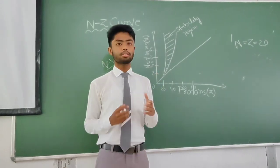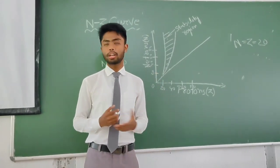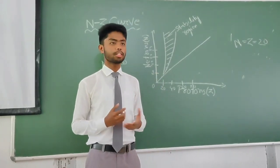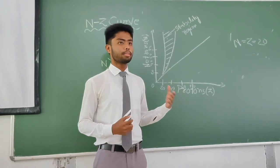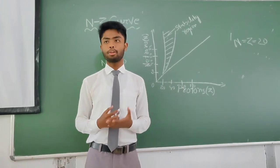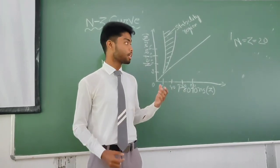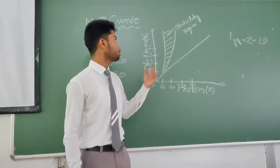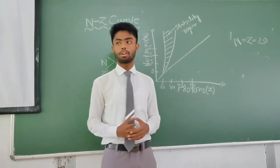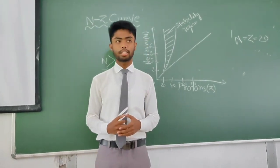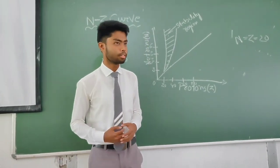In conclusion, we can say there is an increasing number of protons and a corresponding optimal number of neutrons. This is all about the stability curve. Thank you.